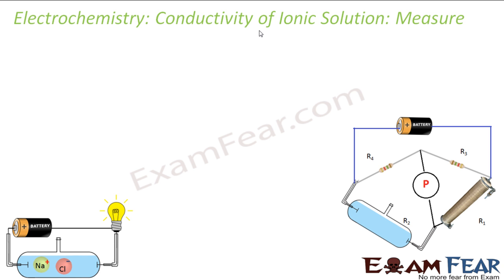Typically, to measure conductivity of a metal, we use a Wheatstone bridge. You must have studied about the Wheatstone bridge in physics. We create a pattern with four different resistances and make sure no current passes through points A and B. In that scenario, R2 × R3 = R1 × R4. I won't cover the Wheatstone bridge in detail since it's been covered in physics — you can watch those videos. That is a way to find out the resistance of an unknown resistor.